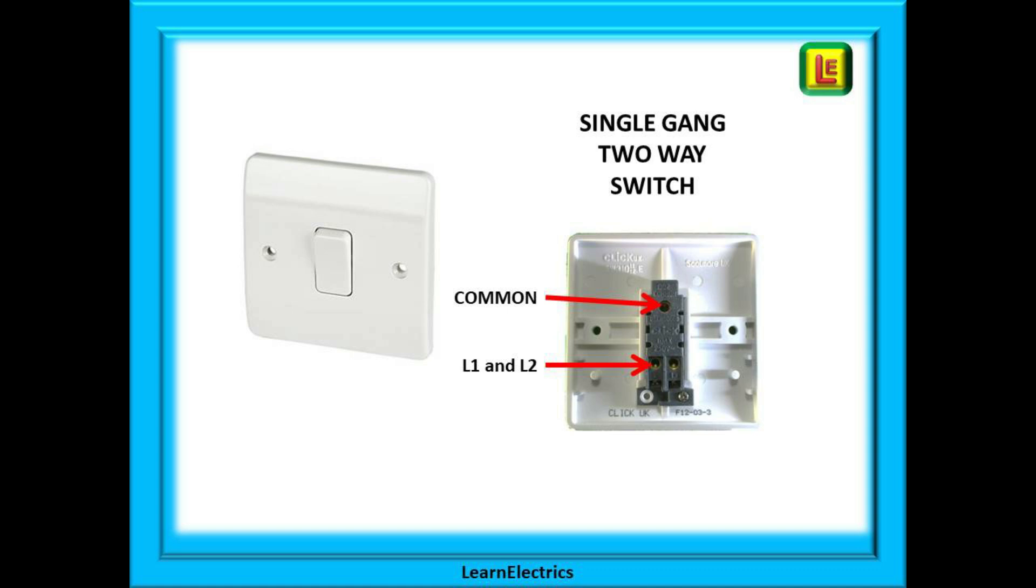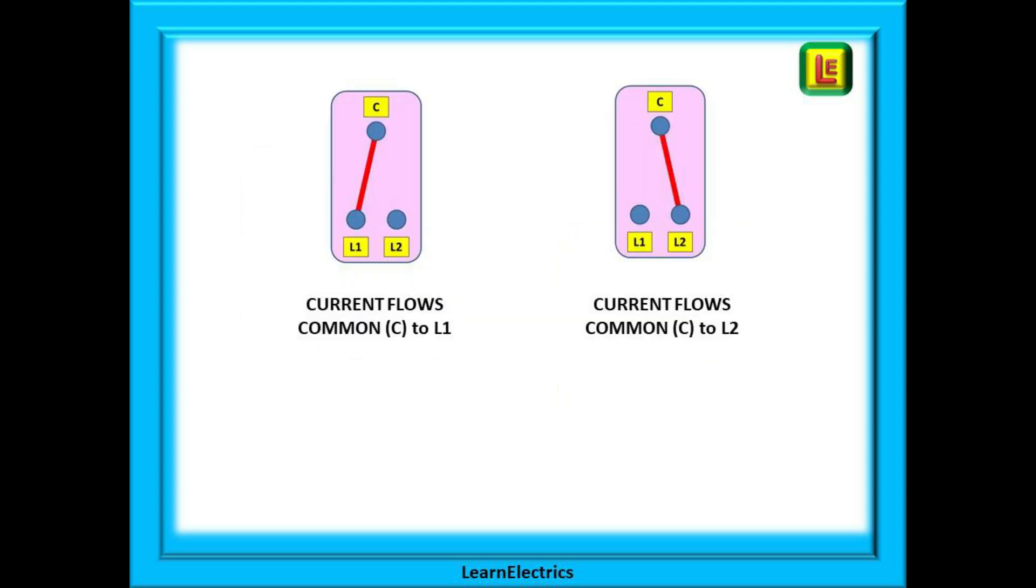Very briefly, we will be demonstrating this with single gang two-way switches. The lettering in your switch may be different as every manufacturer marks them differently, but it should be easy to relate to our switch. In our examples we have marked common as C and the two switch terminals as L1 and L2. All switches will allow current to flow from the common terminal to L1, and operating the switch will allow current to flow from the common again but this time to L2.